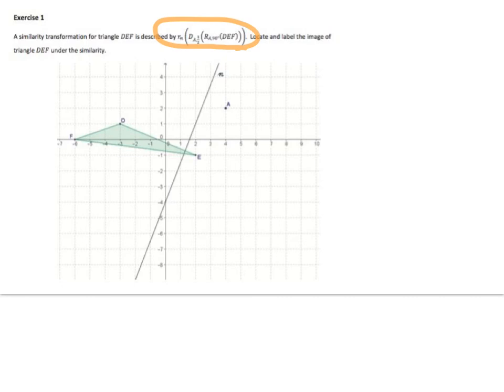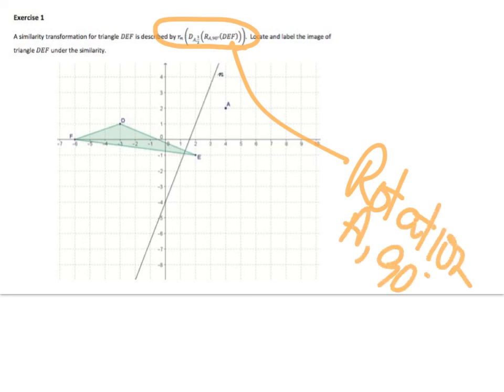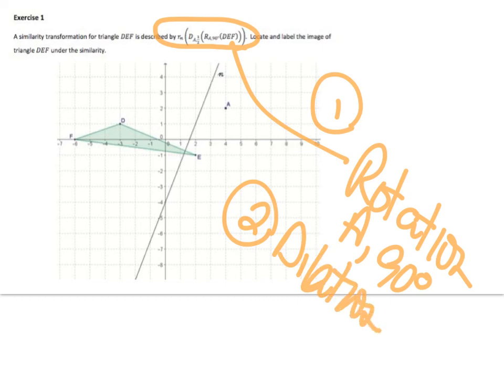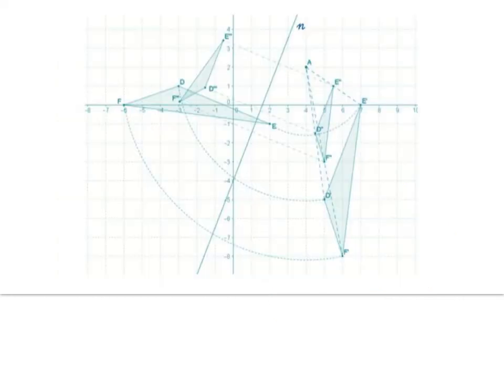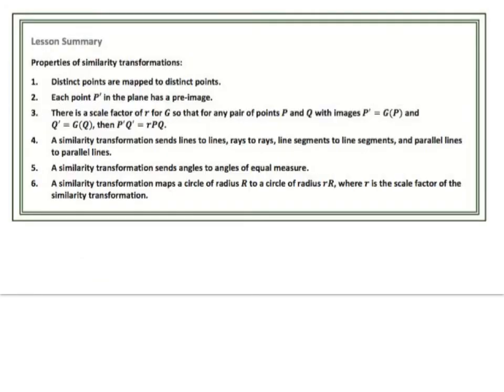And the last one, similarity transformation for the triangle is shown by this given notation. Locate and label the image of triangle DEF under the similarity. So if we look first we do a rotation about point A 90 degrees and then a dilation about point A with a scale factor of a half. Okay we're going to show you the answer, there you go. Look at it if you want to construct it you can, I can help you tomorrow if you want to double check anything but we're not going to step through this one. Okay that's it today.